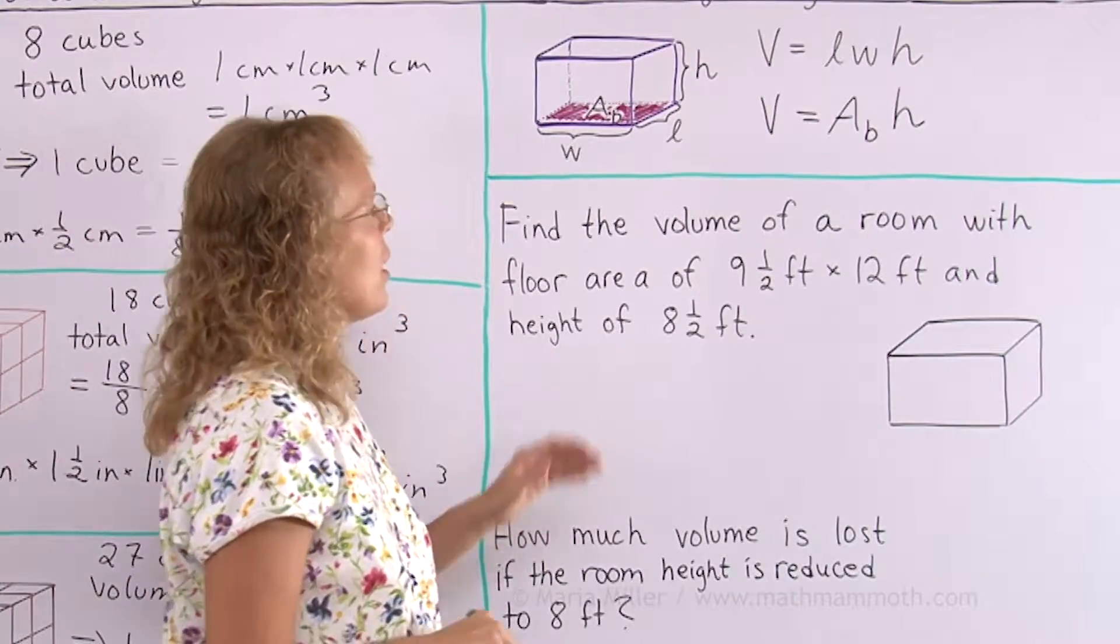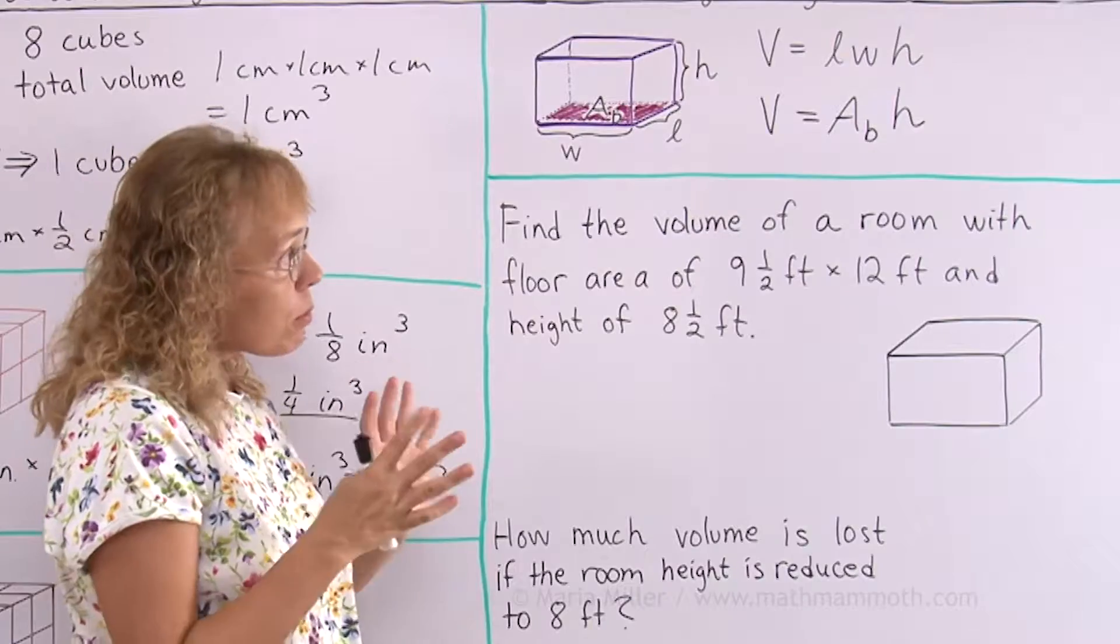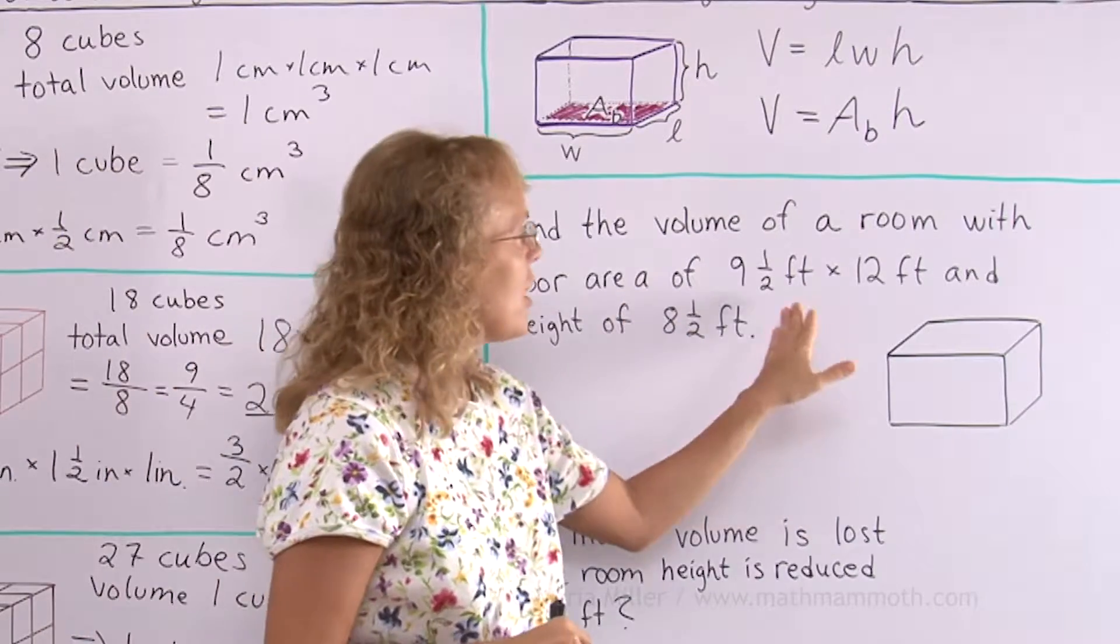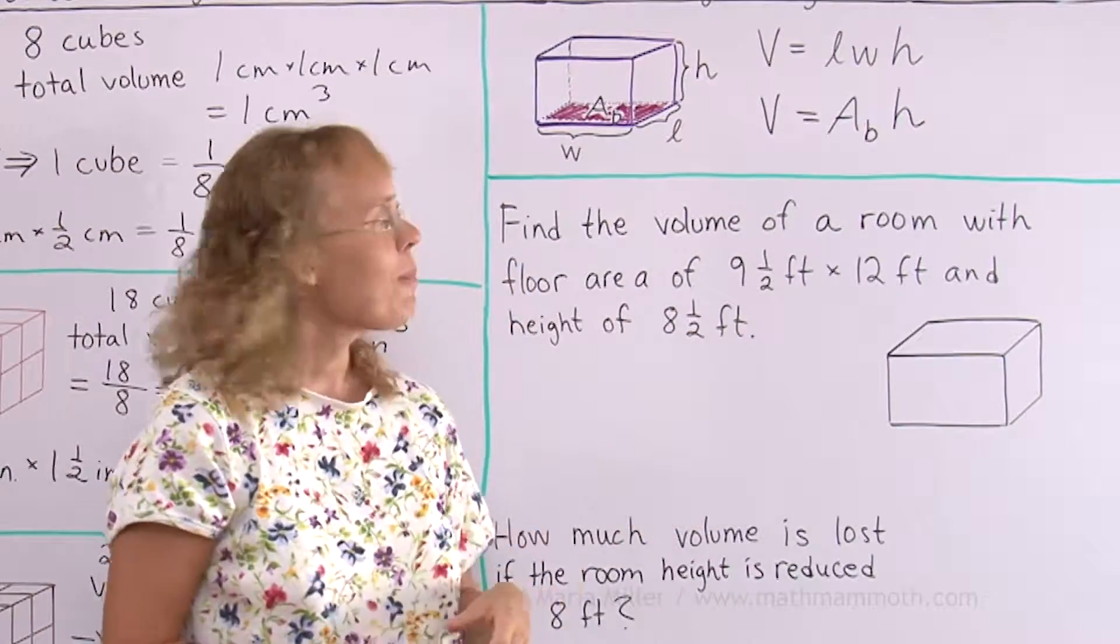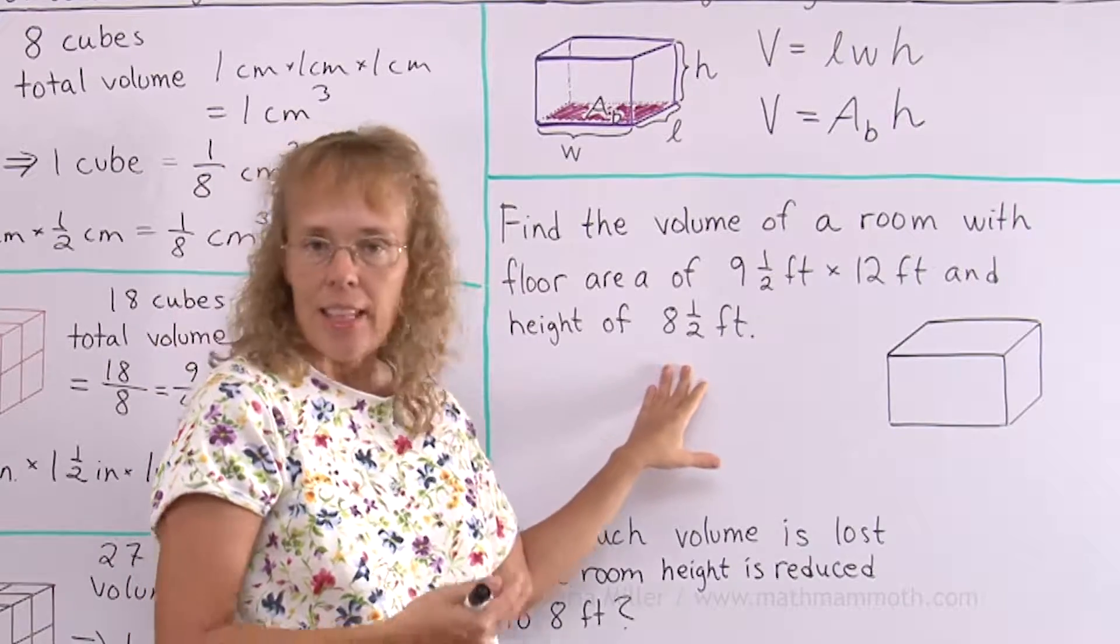Alright, let's solve this problem now. Find the volume of a room with floor area of 9½ ft times 12 ft and height of 8½ ft.